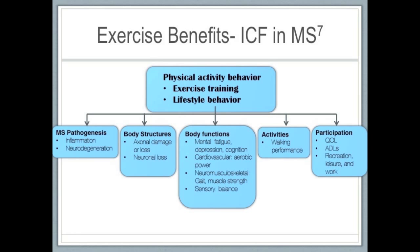The pathogenesis of MS causes inflammation and neurodegeneration, which leads to axonal damage and neuronal loss. Body functions can be affected by these changes, causing fatigue, depression, poor endurance, muscle weakness, and sensory changes. All of these impairments cause the activity of walking to be difficult, which decreases quality of life, independence with ADLs, recreational activities, and work capacity.